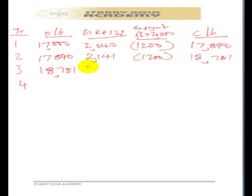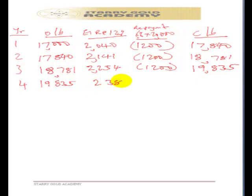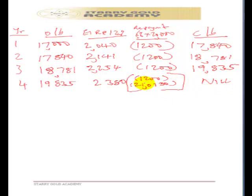For year three, the opening balance carries forward. Applying 12% gives $2,254 in interest. We repay $1,200, leaving a closing balance of $19,835. For year four, the opening balance is $19,835. Applying 12% gives $2,380 in interest. The total repayment for year four covers everything to arrive at a nil closing balance, consisting of $1,200 plus the remaining loan balance.